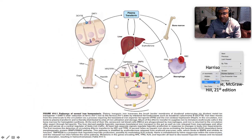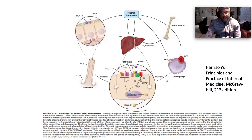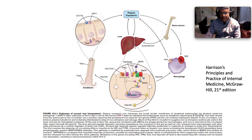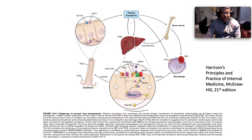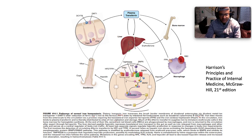In normal iron homeostasis, dietary inorganic iron traverses the brush border membrane of the duodenal enterocytes via the divalent metal transporter DMT1, after reduction from the ferric to ferrous state by intestinal ferric reductases such as duodenal cytochrome b (DcytB). Iron then moves from the enterocyte to the circulation via ferroportin and the iron oxidase hephaestin. In the circulation, iron binds to plasma transferrin and is distributed to sites of utilization and storage, supplying iron to erythroid cells in the bone marrow for hemoglobin synthesis.